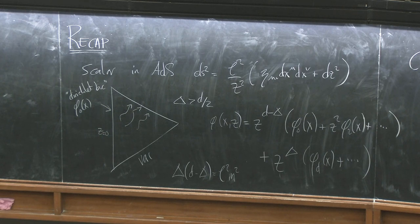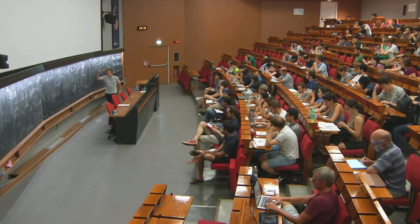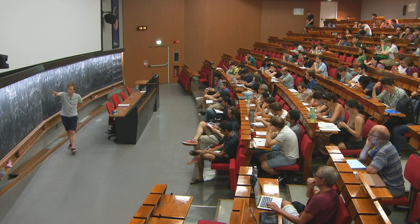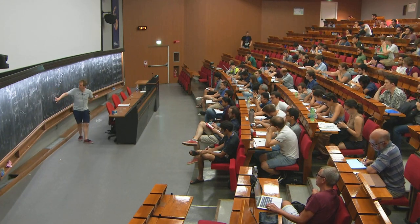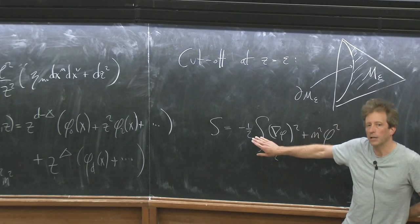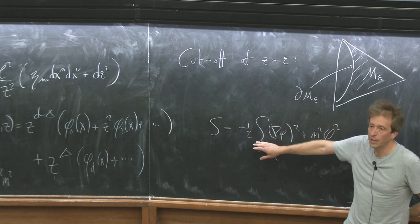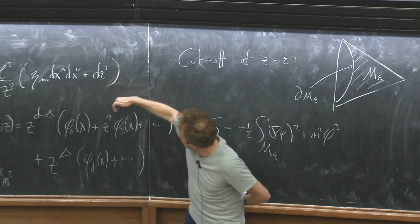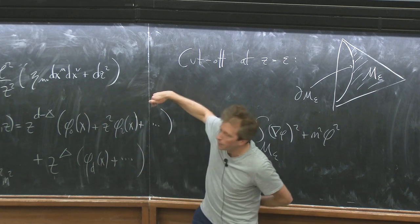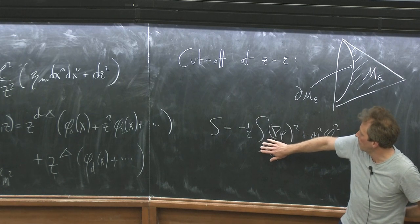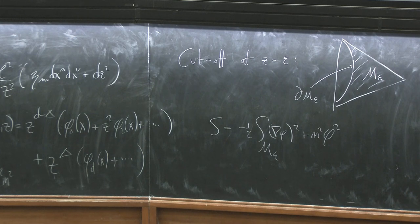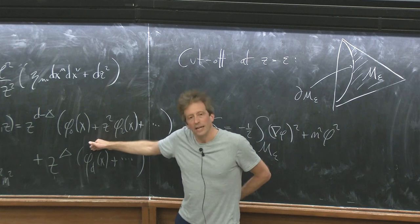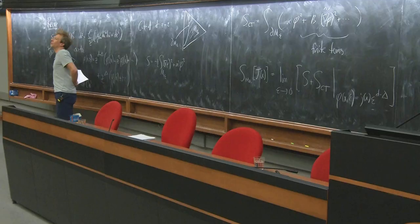We took that solution and plugged it into the classical action. When you integrate by parts, you get an equation of motion and a surface term; the surface term on a solution determines the action. That surface term diverges because there are a finite number of terms with divergent behavior towards the boundary, making the action infinite — unless you restrict to trivial data phi_0 equals zero, in which case the solution is zero and not interesting.